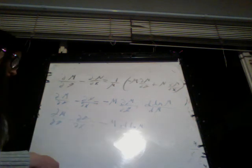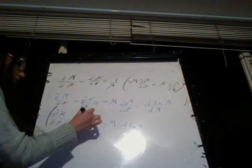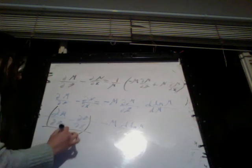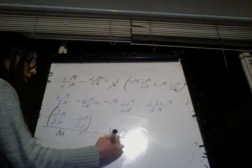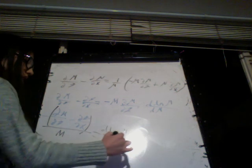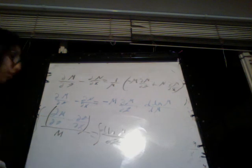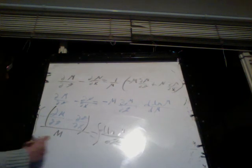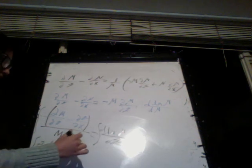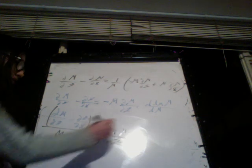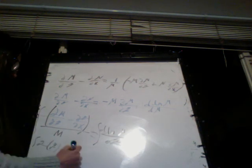You divide everything by minus M, so you have minus all of this divided by M, and this equals the derivative of the natural log of mu with respect to y. You integrate both sides. Let's call this g(y). So integrating g(y), all this equals the integral of the derivative, which is that same function: natural log of mu.